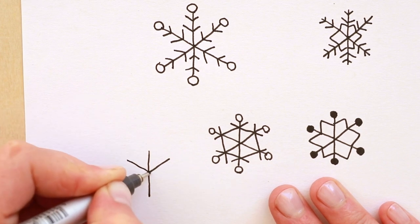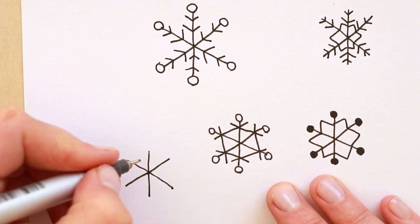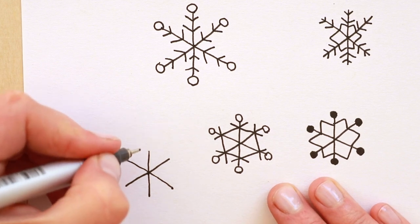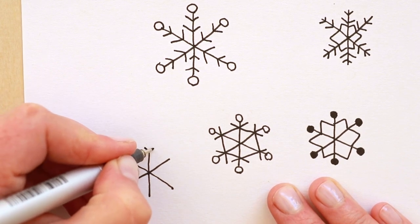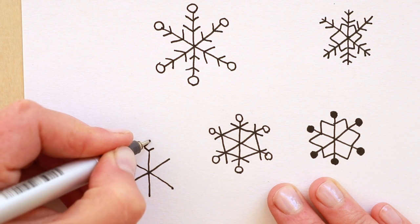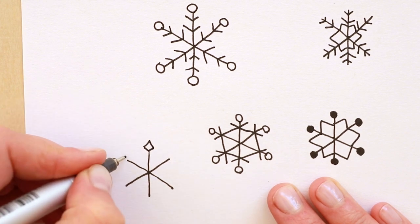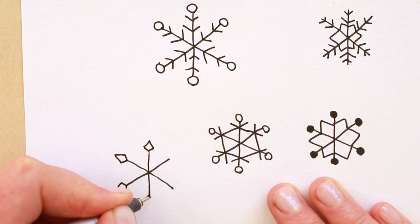And instead of putting circles on the tips let's put little romp shapes. So make a little v and another v. It's like a pointed crystal. A v and a v. Little pointed romp shapes.